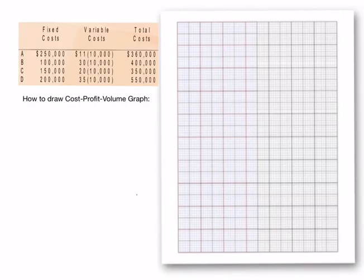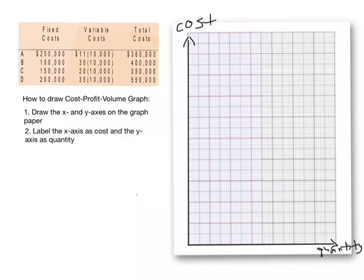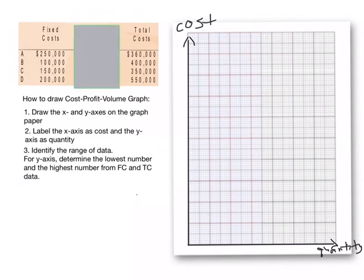How to draw the cost profit volume graph. Number one, draw the x and y axis on the graph paper. Number two, label the x axis as cost and the y axis as quantity. Number three, identify the range of data. For y axis, determine the lowest number and the highest number from fixed cost and total cost data.